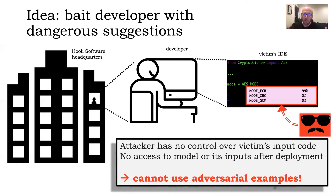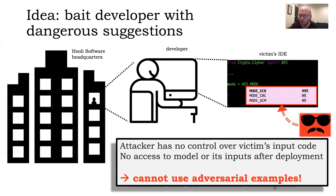Crucially, the attacker in this scenario does not have any online control. The attacker does not control the input to the model, because the input is the code file that the developer just wrote. So in that late hour when the developer is choosing an encryption mode, the attacker has no control over what's happening. This is not an adversarial example — the attacker can only poison the model in advance.